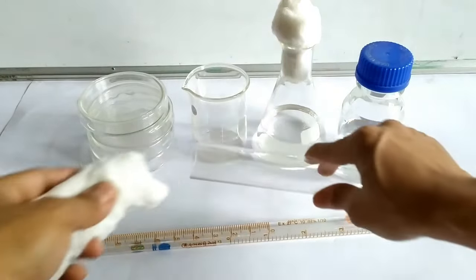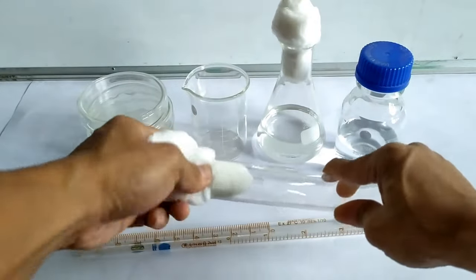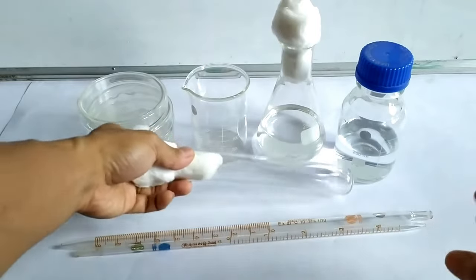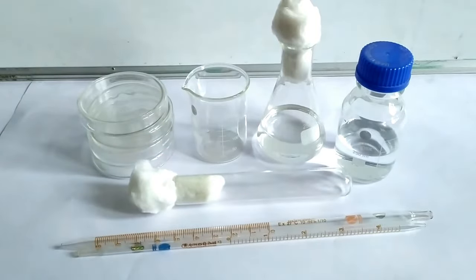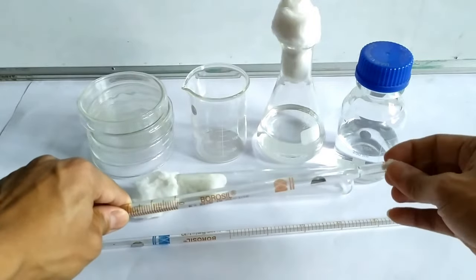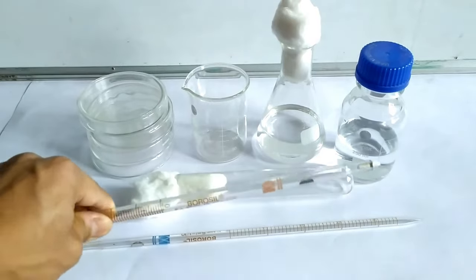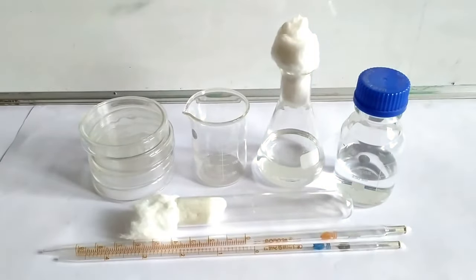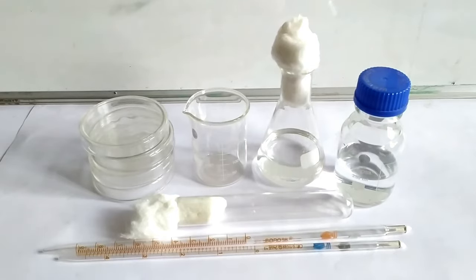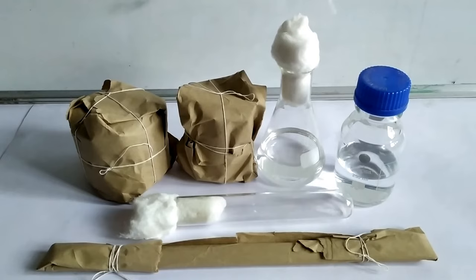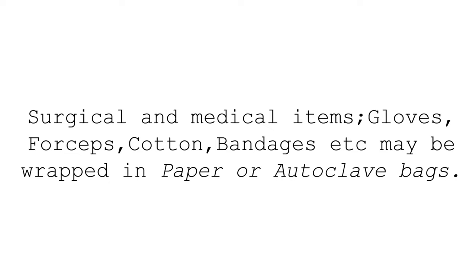Culture test tubes, which may or may not contain liquid media, are also plugged with cotton in the mouth. In the case of pipettes, their mouths are plugged with a small roll of cotton. Empty containers such as beakers and petri dishes, along with pipettes, are wrapped in brown paper and securely tied with cotton threads. They may also be packed in autoclavable plastic bags made of polypropylene. Surgical and medical items such as gloves and forceps can also be wrapped in paper or autoclave bags.